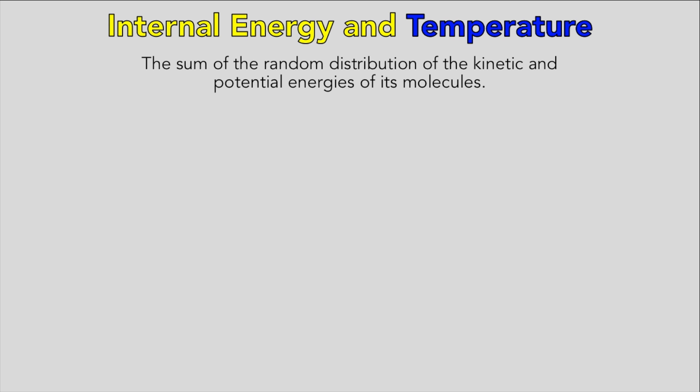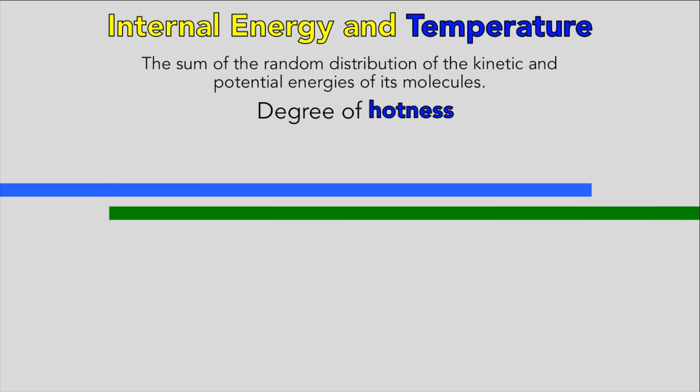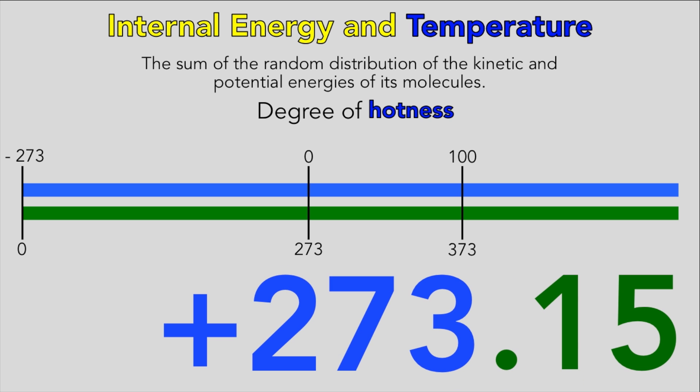On to temperature, which in scientific terms is the degree of hotness of the object. There are two scales: the Celsius scale, defined in terms of zero degrees C being the temperature of pure melting ice and 100 degrees C being the temperature of steam at standard atmospheric pressure. The absolute scale of temperature is Kelvin, defined in terms of absolute zero with zero K being the lowest possible temperature, and the triple point of water 273.16 Kelvin where ice, water, and water vapor can coexist in thermodynamic equilibrium. To convert from Celsius, you add on 273.15 to get Kelvin.